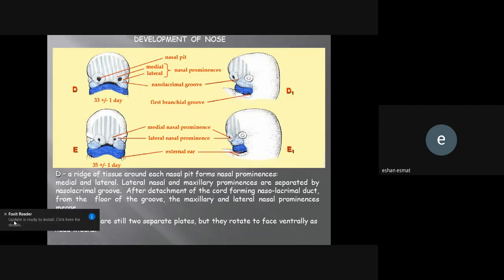Lateral nasal and maxillary prominences are separated by the nasolacrimal groove. After development of the nasolacrimal duct from the floor of the groove, the maxilla and lateral nasal prominence merge. Nasal pits are still two separated plates, but they rotate to face ventrally as the head widens.